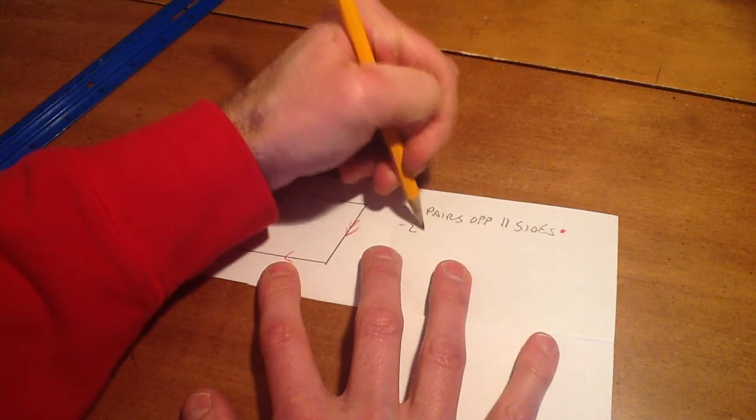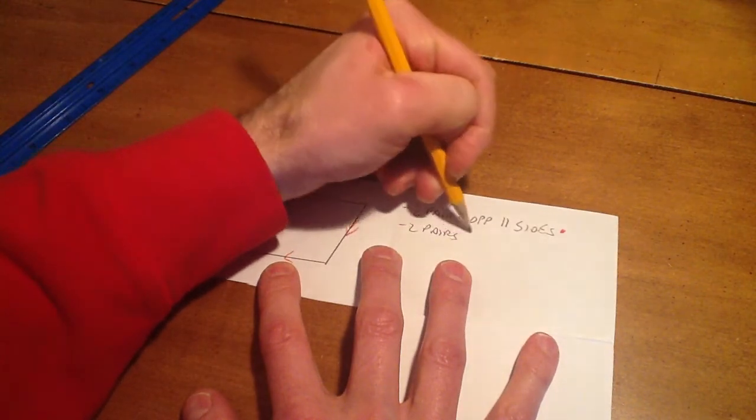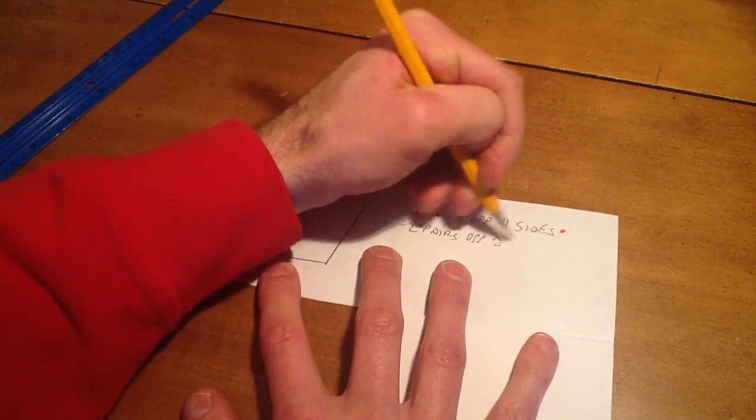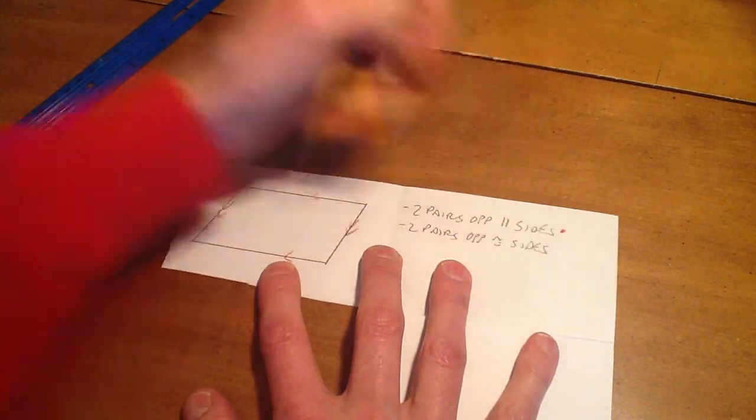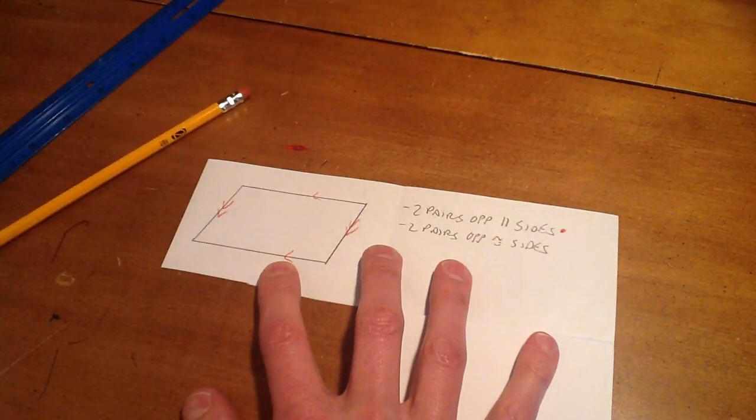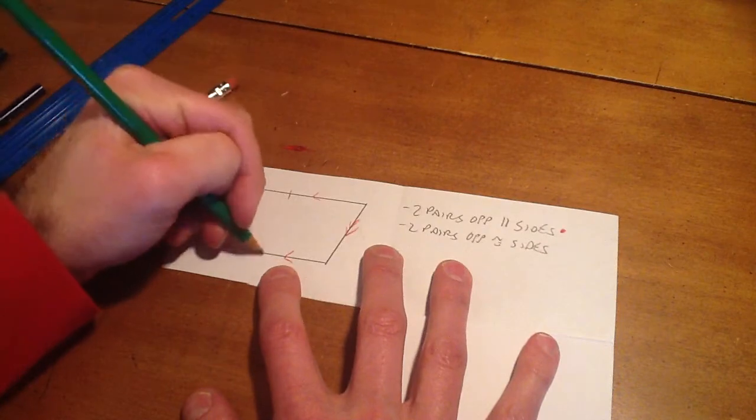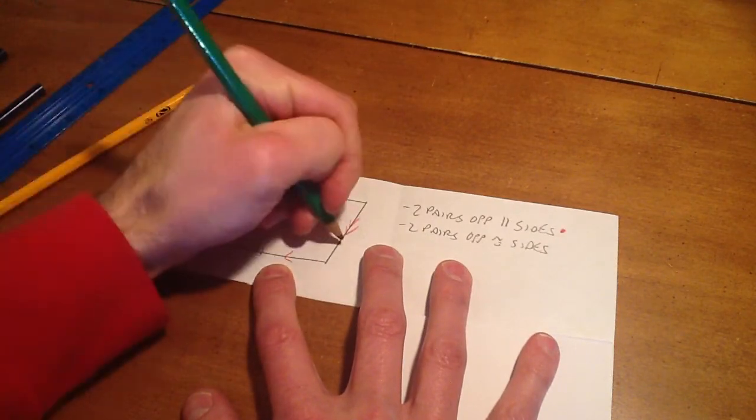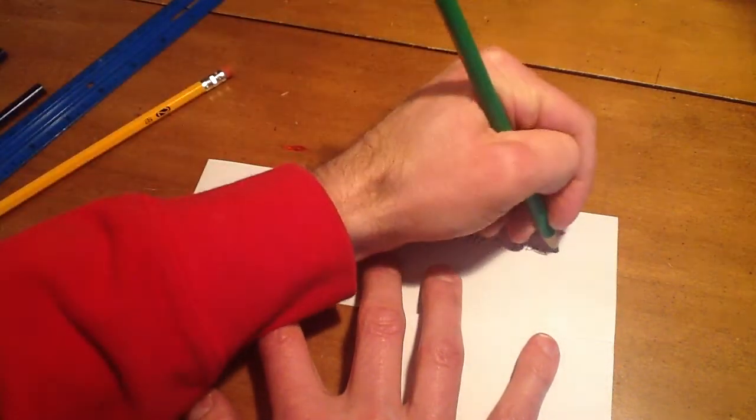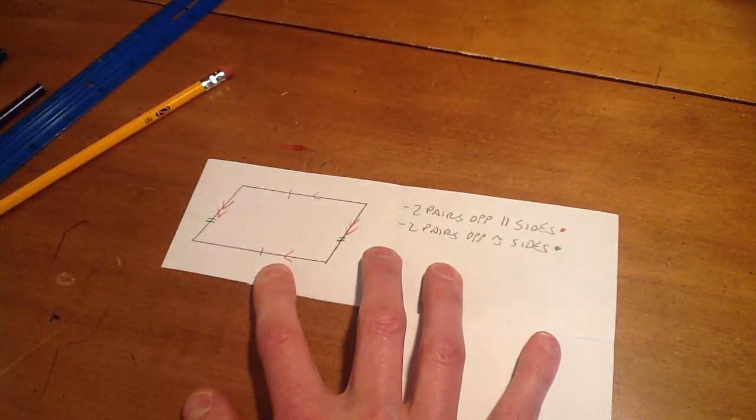Next property is two pairs of opposite congruent sides. Again, take a colored pencil, mark top and bottom congruent, left side, right side congruent, and we color code it in our property statement.